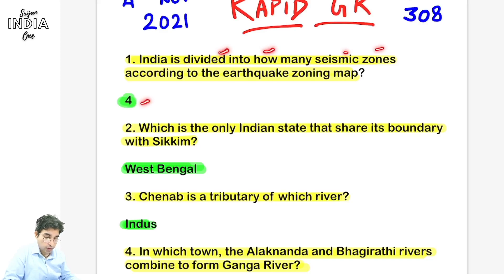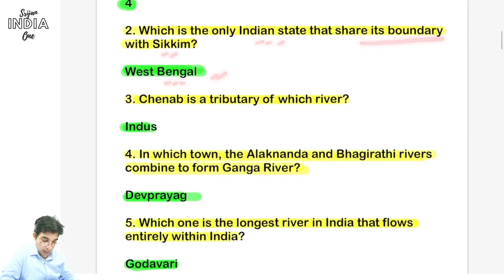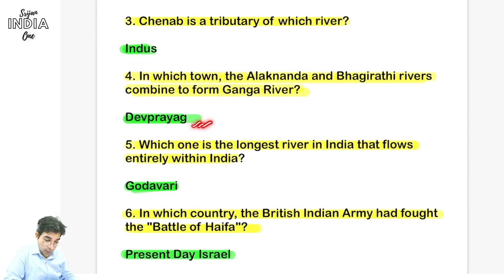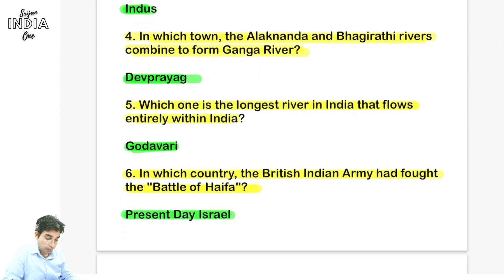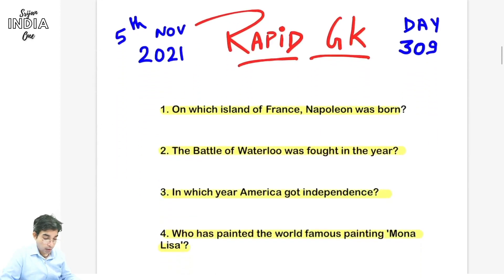India ko divide kiya hai four seismic zones mein according to the earthquake zoning map. West Bengal wo state hai jo share karta hai boundary with Sikkim. Chenab River tributary hai Indus River ki. Dev Prayag mein sangam hai Alaknanda aur Bhagirathi river ka - combine hokar wo bante hain Ganga River. Godavari longest river hai India ki that flows entirely within India.